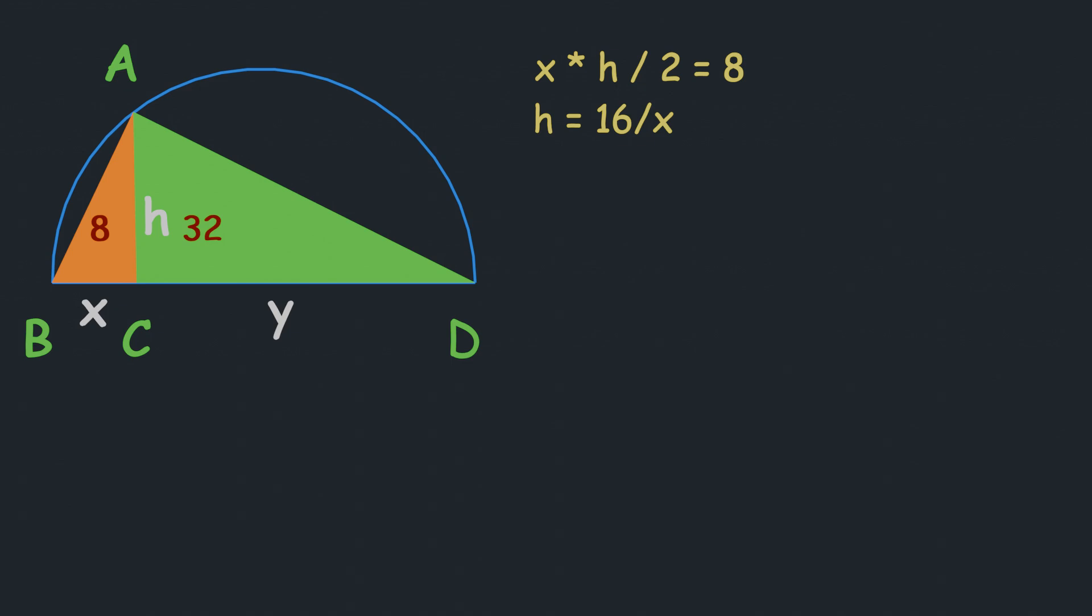Let's move to the other triangle. This triangle has height h and base y, so the equation of area will be h × y / 2 = 32. Multiply both sides by 2 and divide by y to get h = 64/y.